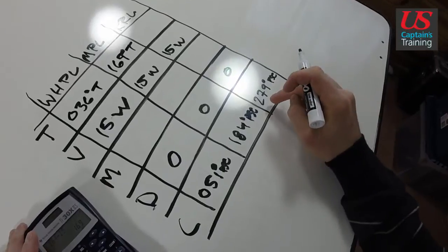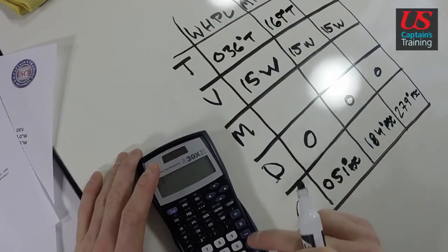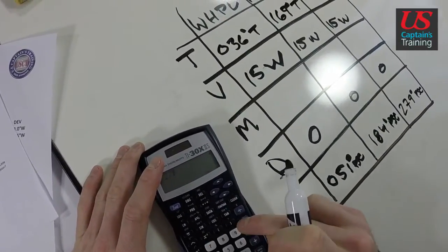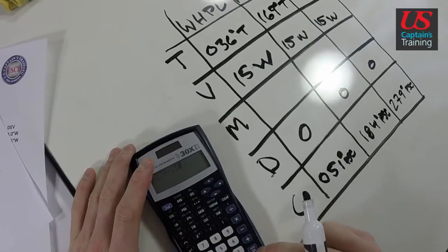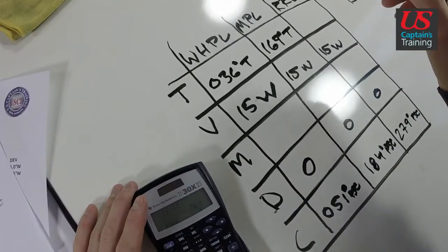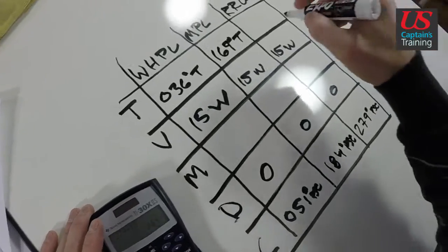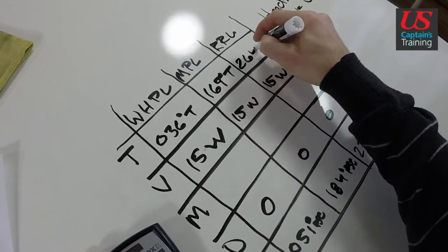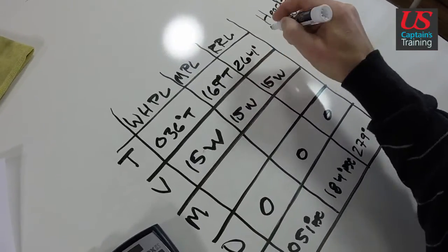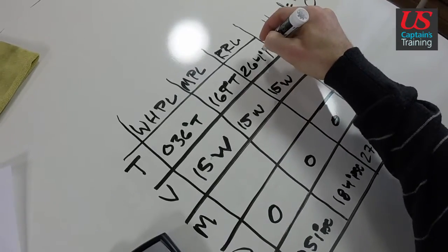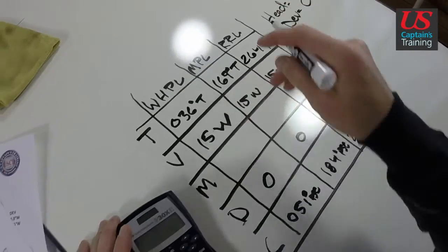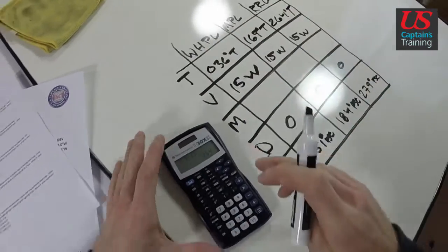184 minus 15 equals 169 degrees true. 279 minus 15 west equals 264 degrees true. Okay, now we have the true bearings of our bearing.